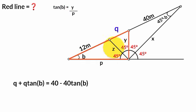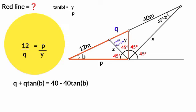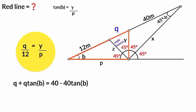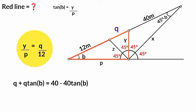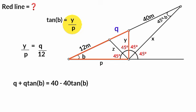Now if you look at this triangle, this line bisects this angle. By the angle bisector theorem, 12 over Q must equal P over Y. So 12 over Q equals P over Y. Taking the reciprocal of both sides, Q over 12 equals Y over P. Recall that tan B equals Y over P, and we found Y over P equals Q over 12. So we can replace Y over P, giving tan B equals Q over 12.